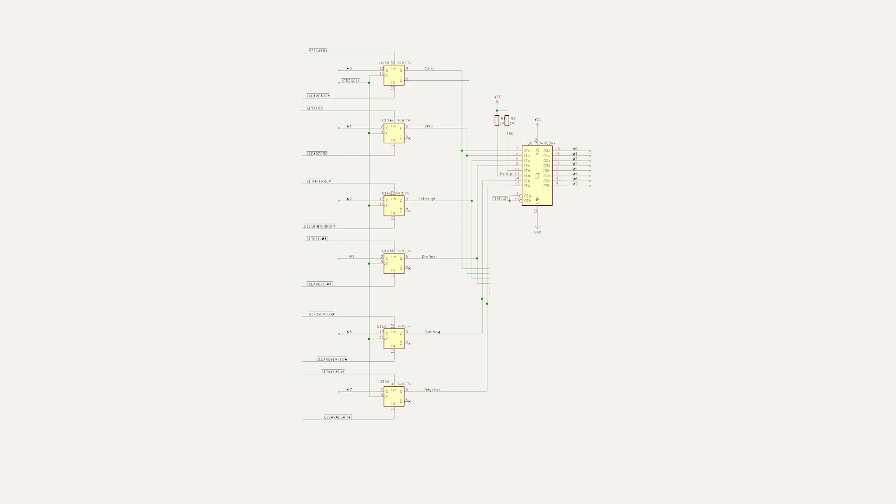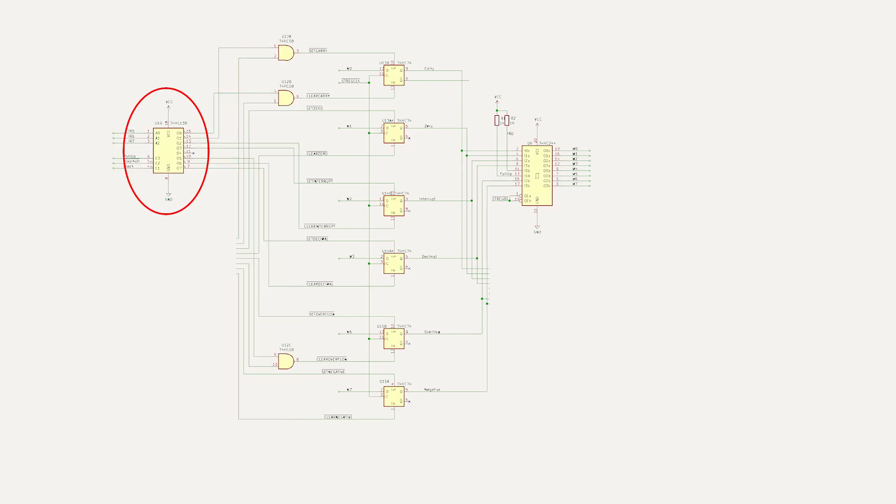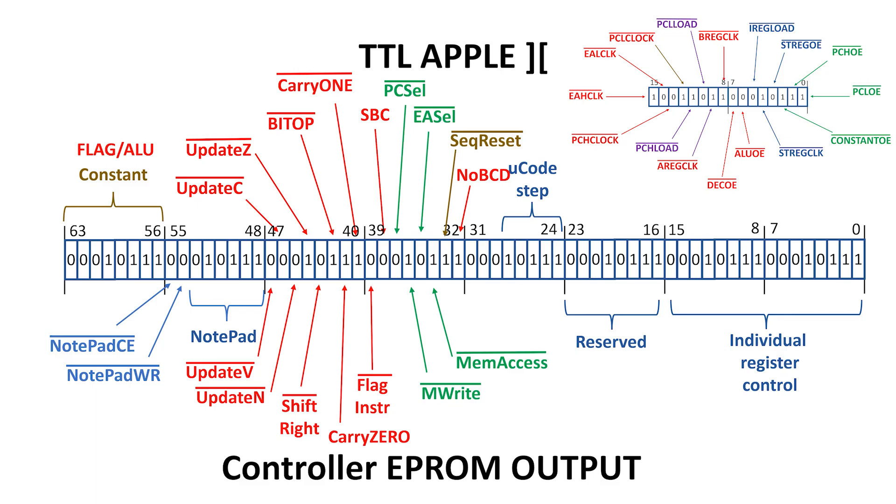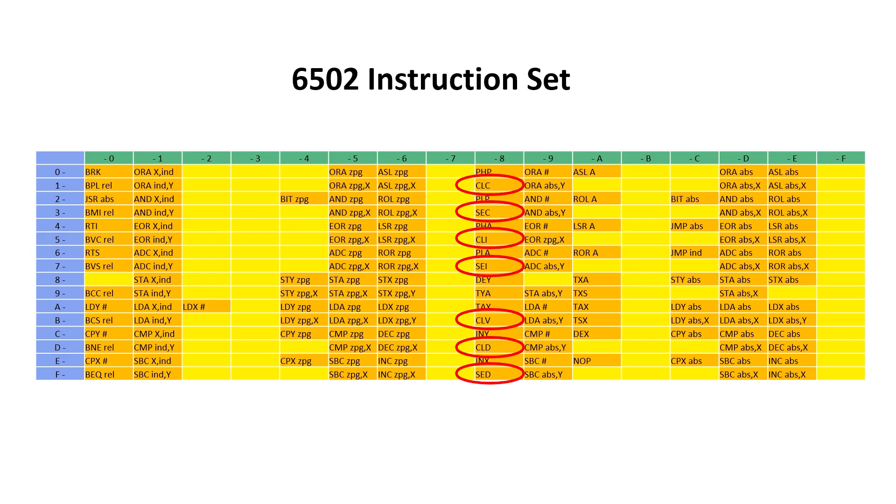If we want to clear carry, we assert the clear carry input, which means we drive it low. This 74HC138 3-to-8 decoder receives the input from the instruction register bits 5 through 7. It's enabled by the flag-inst bar signal from the control word, and this allows us to implement the 6502 instructions highlighted in red.